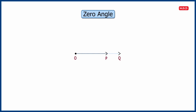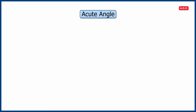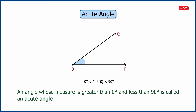Now about zero angle — do you think the angle shown here measures zero degrees? Yes, you are correct. An angle of measure zero degrees is called a zero angle. Now we will learn about acute angle. An angle whose measure is greater than zero degrees and less than 90 degrees is called an acute angle.